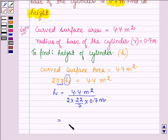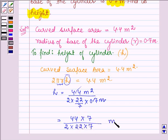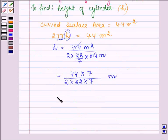Let us simplify further. We have 44 ÷ (2 × 22/7 × 0.7). Converting, this becomes 44 × 7 ÷ (2 × 22 × 7) meters. 7 cancels with 7.